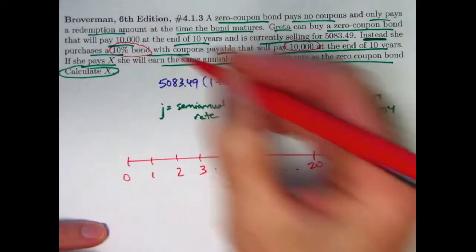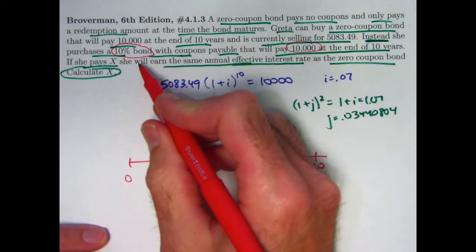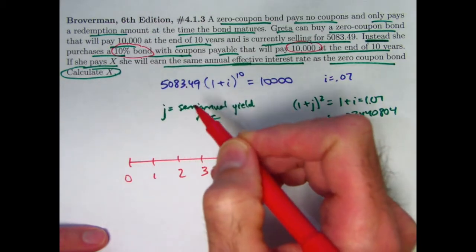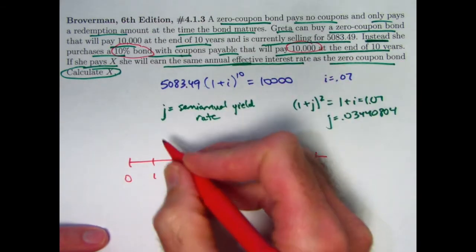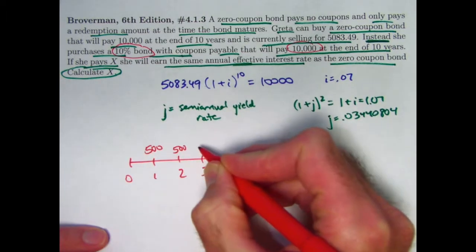It is a 10% bond. That would be the percentage that you would take and divide by 2 to help you figure out the semi-annual interest that you get for the coupons. 5%. 10% divided by 2 would be 5%. 5% of 10,000 is 500. The amount of your coupons is going to be 500.